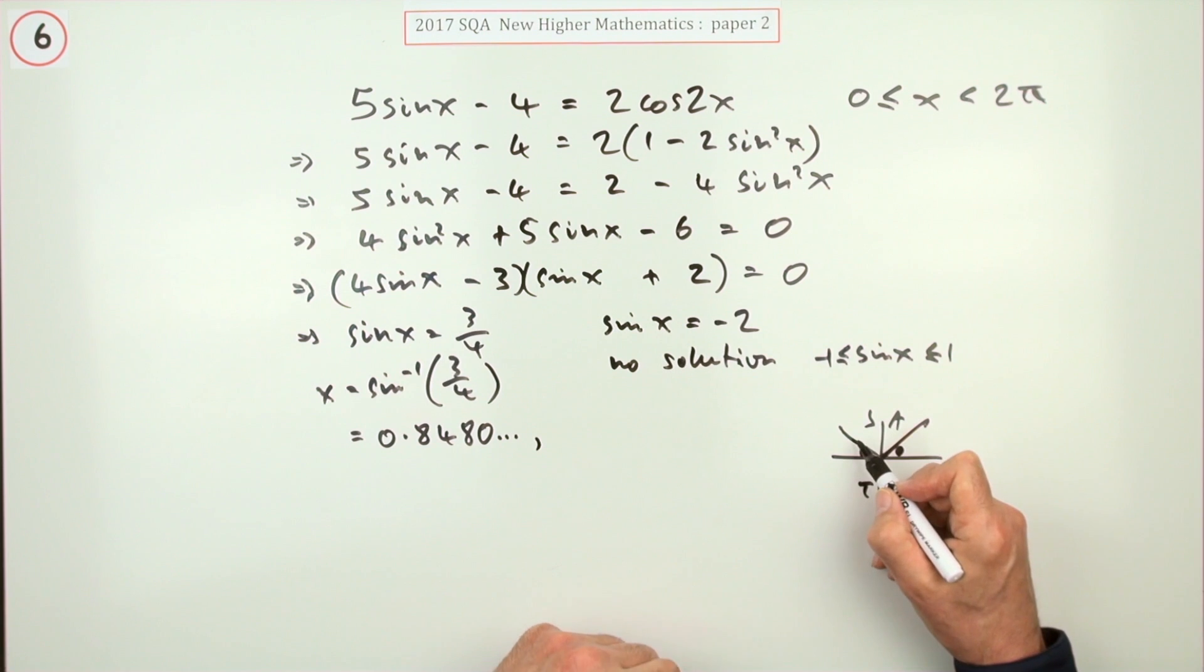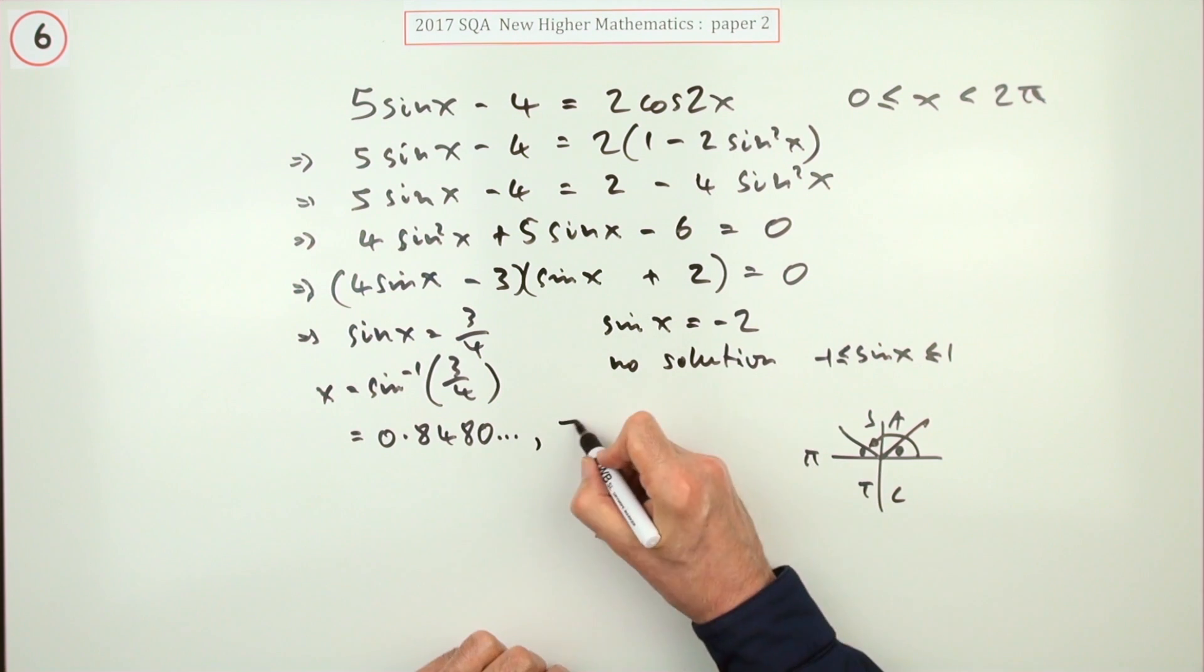So the angle I want will be π minus that. Maybe I'll put it down: π - 0.8480 and so on.